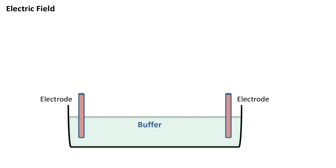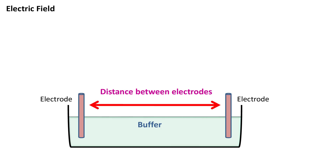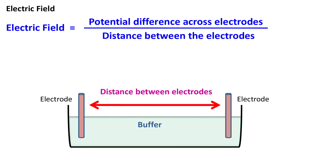During electrophoresis, the distance between the two electrodes is an important factor to be considered. This is because the electric field between the electrodes is calculated as the ratio of the potential difference across the electrodes and the distance between them. The unit of electric field will be volts per centimeter.